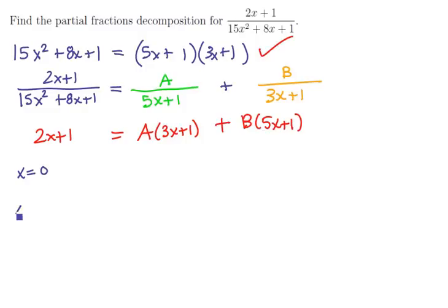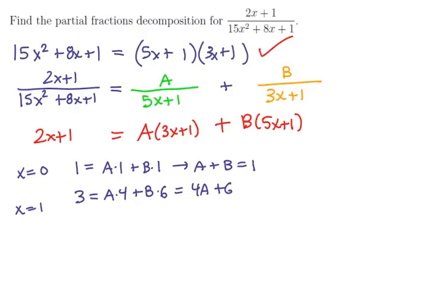We need two values, say x=0 and x=1, to create a system of two equations and two unknowns. At x=0, we get 1 = A+B. At x=1, we get 3 = 4A+6B.